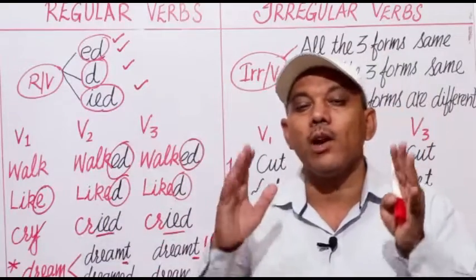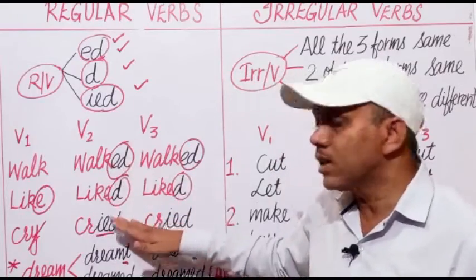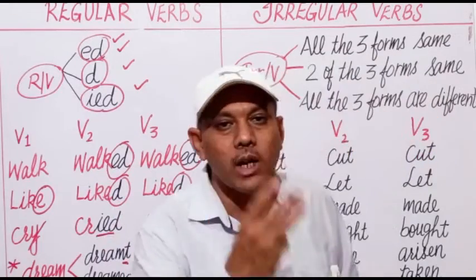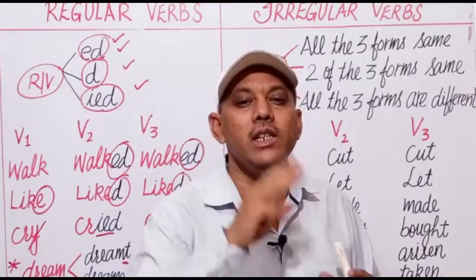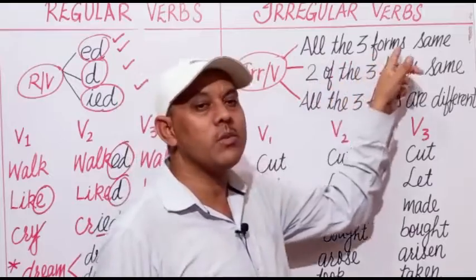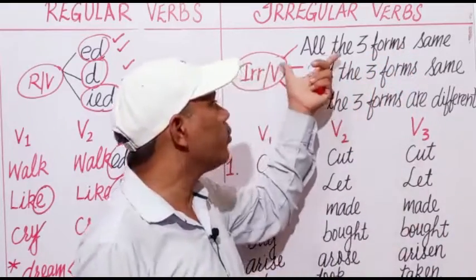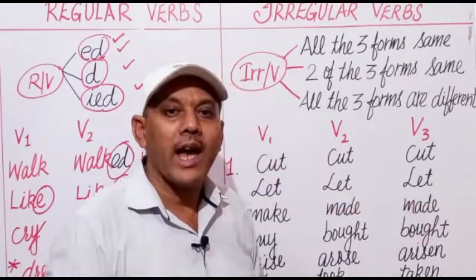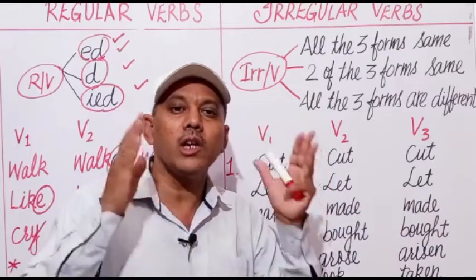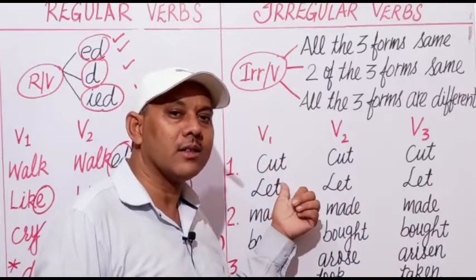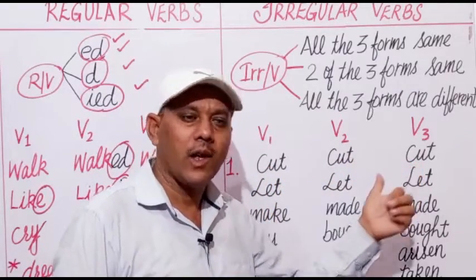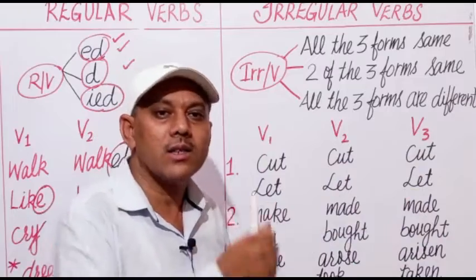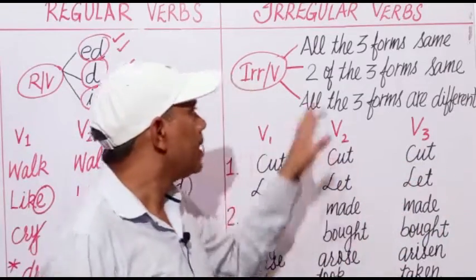Now, what are irregular verbs? Irregular verbs do not end with -ed, -d, or -ied form. Irregular verbs are basically of three types. The first type is verbs where all three forms are the same. For example: cut, cut, cut; let, let, let; put, put, put; cast, cast, cast and so many others.